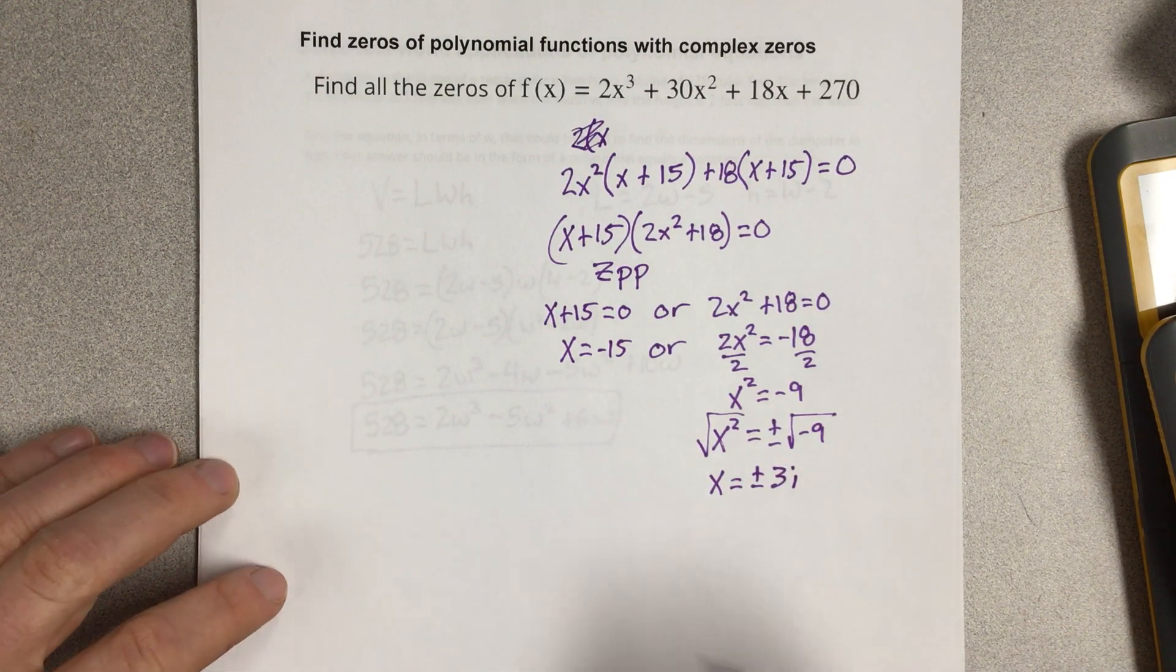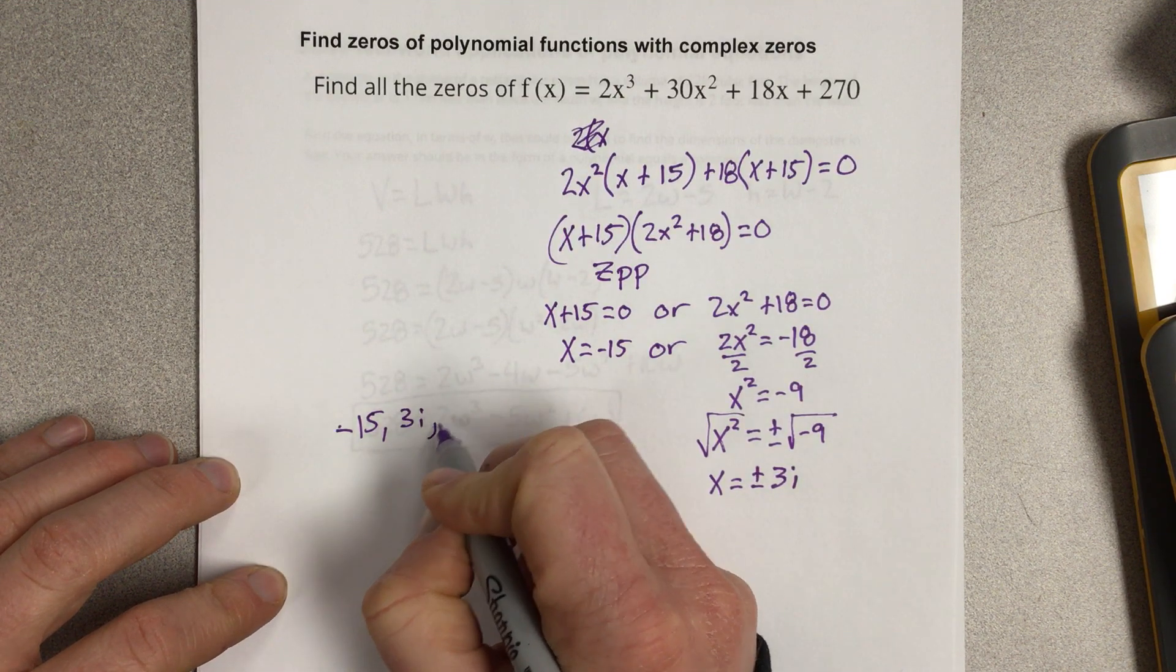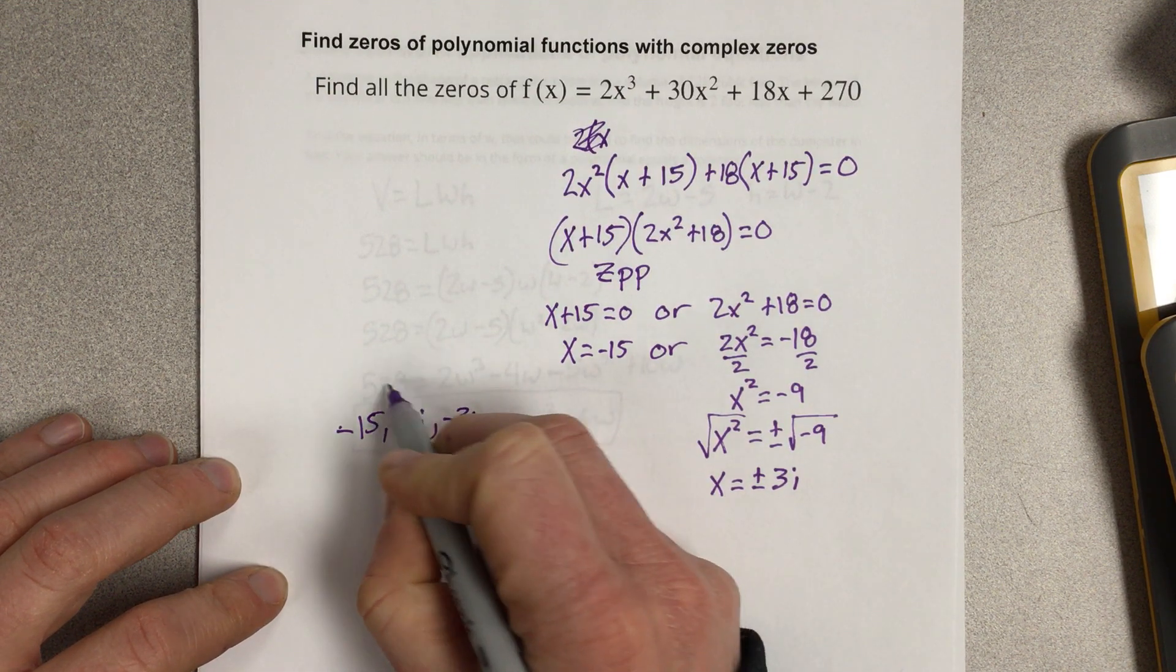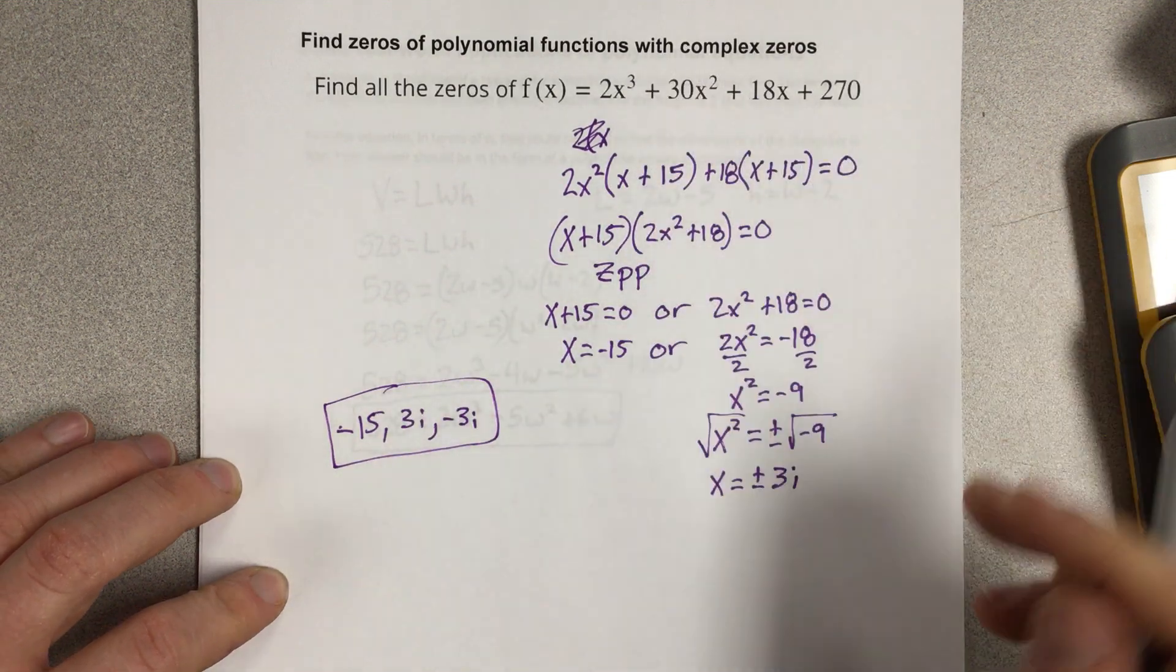So our solutions are negative 15, 3i, and negative 3i. Those are our three solutions to this cubic equation. Thank you.